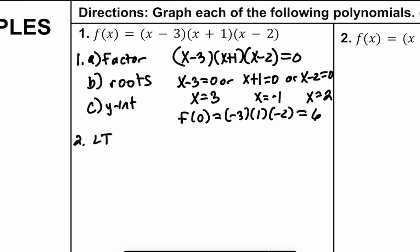Step two: let's talk about the lead term — I'll always abbreviate that as LT. The lead term is the term with the highest power. If we pull out the x's only and multiply them together, we get x times x times x, or x cubed. So our degree n is 3, which is odd. For a polynomial with an odd degree and a positive coefficient, the left end goes down and the right end goes up — there will be some bumps in between, but that's the end behavior because it's a cubic.